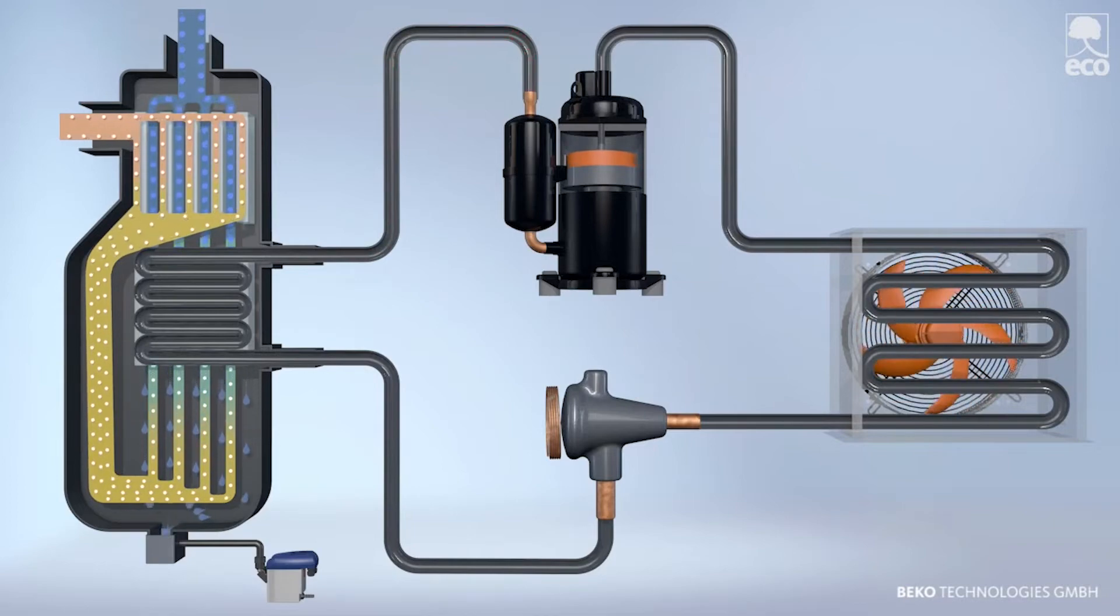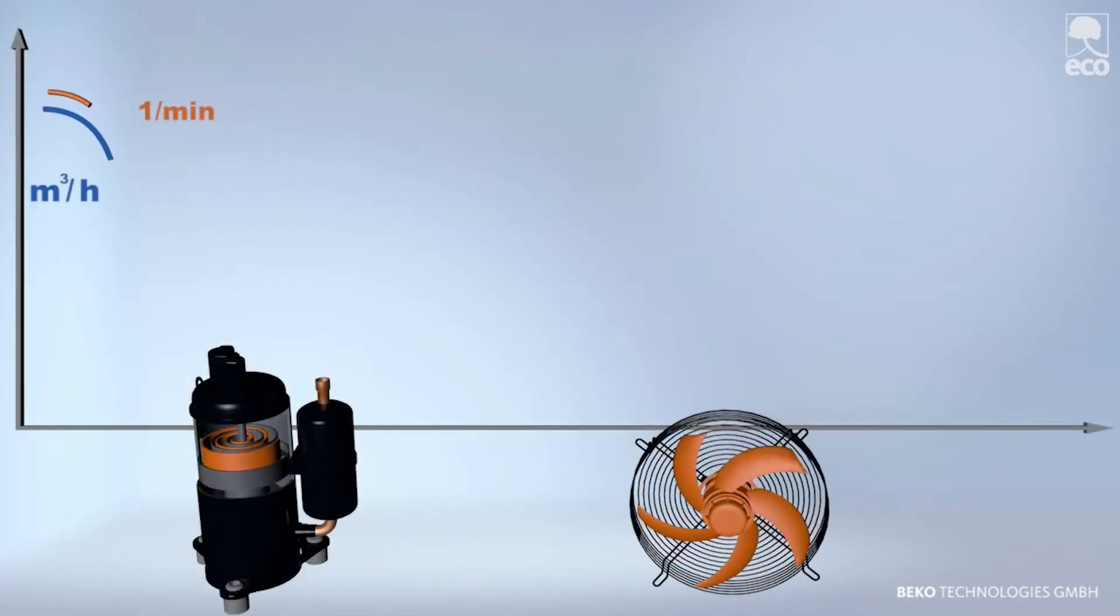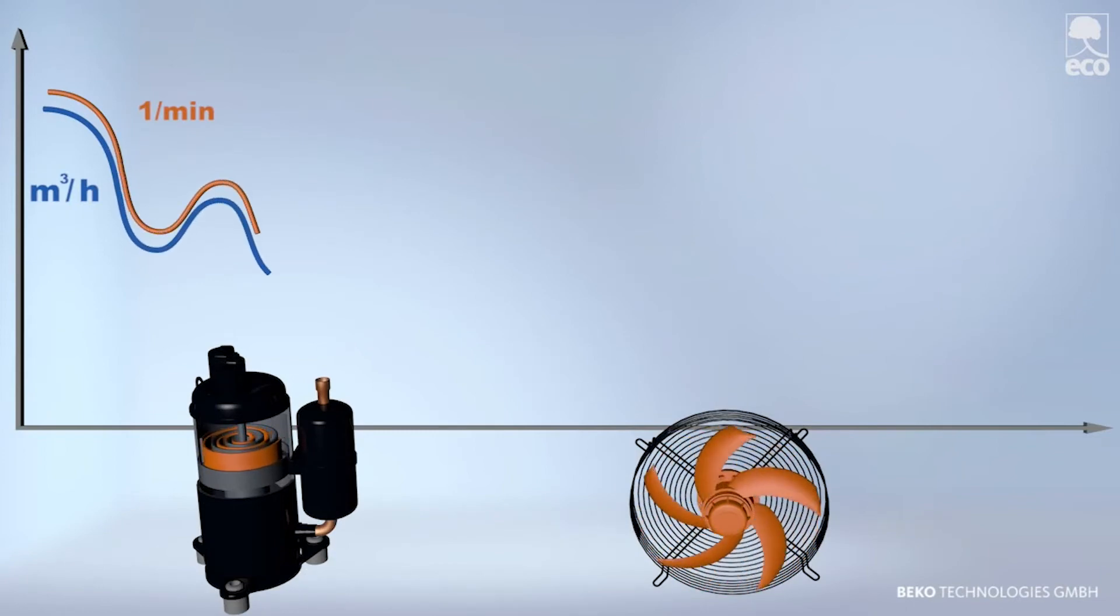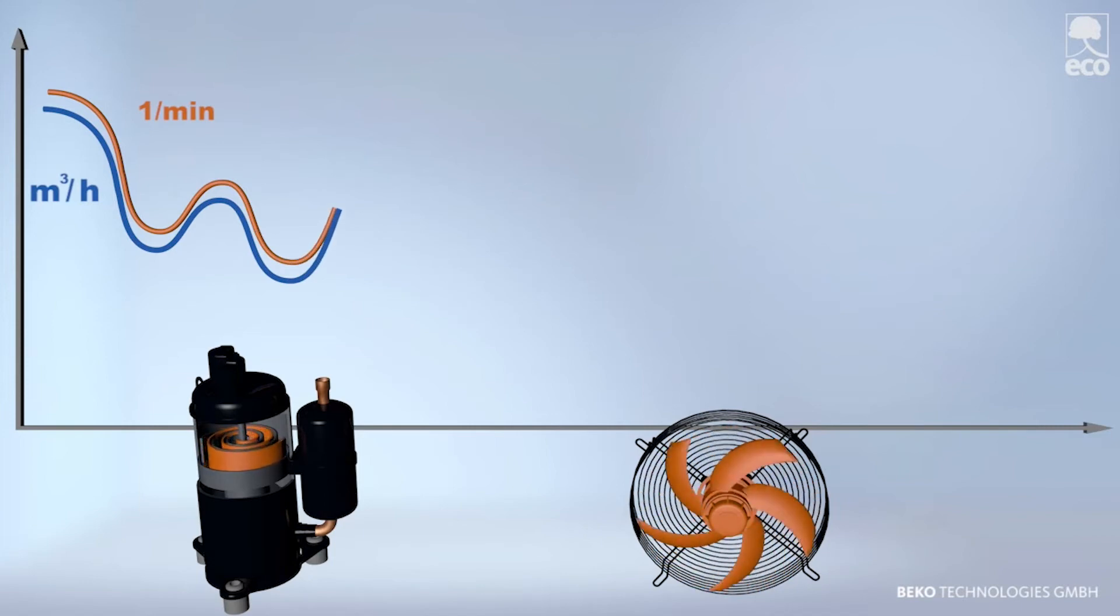In order to save energy when fluctuations in compressed air occur, such as flow volume, temperature, or pressure, the smaller versions of the DryPoint RA Eco switch the refrigerant compressor on and off to accommodate variations in the drying requirements.